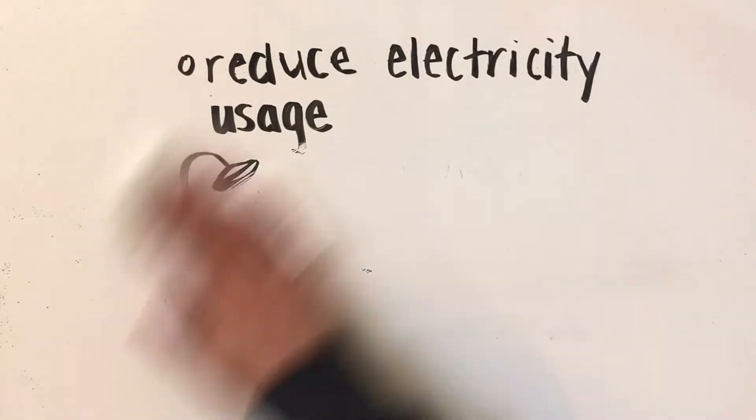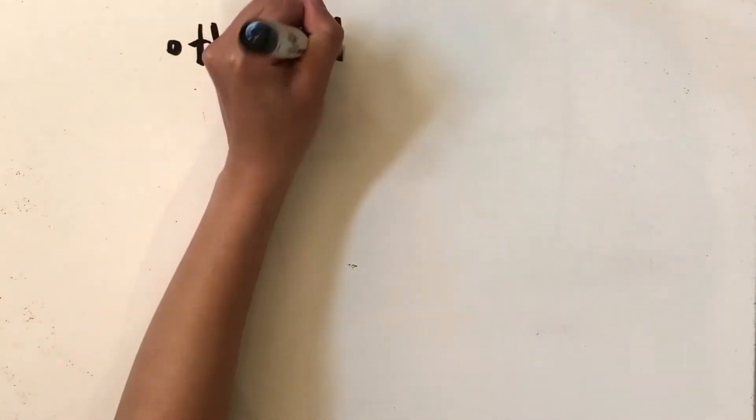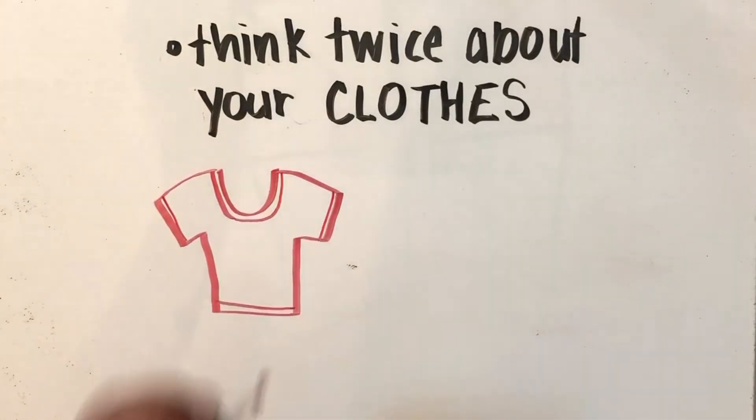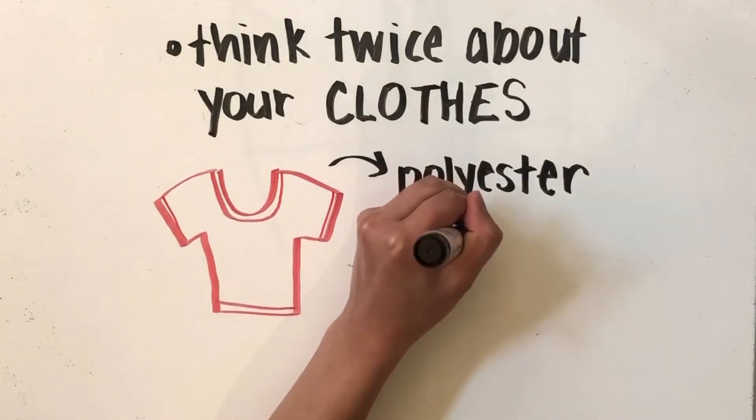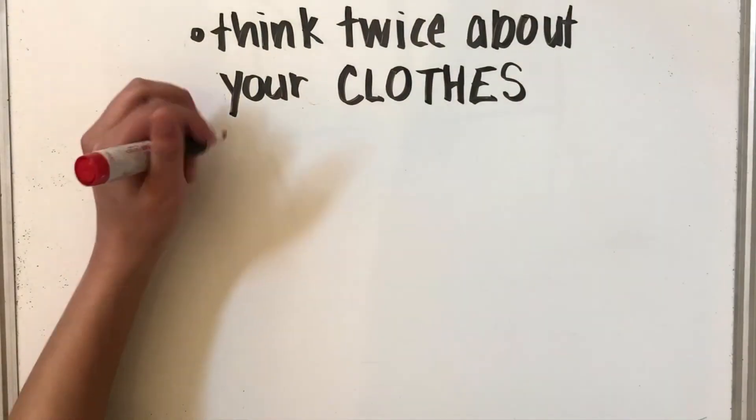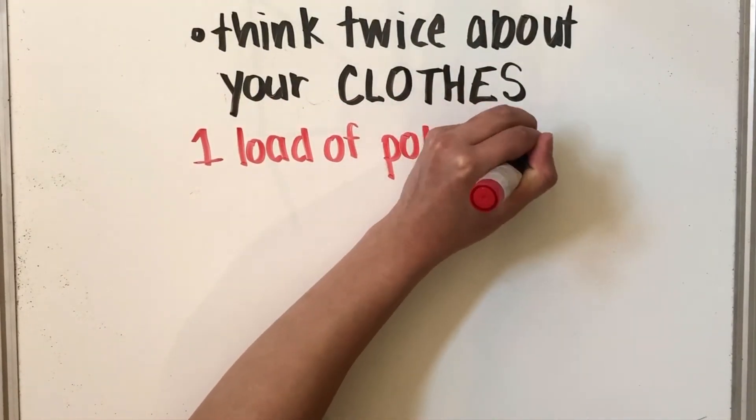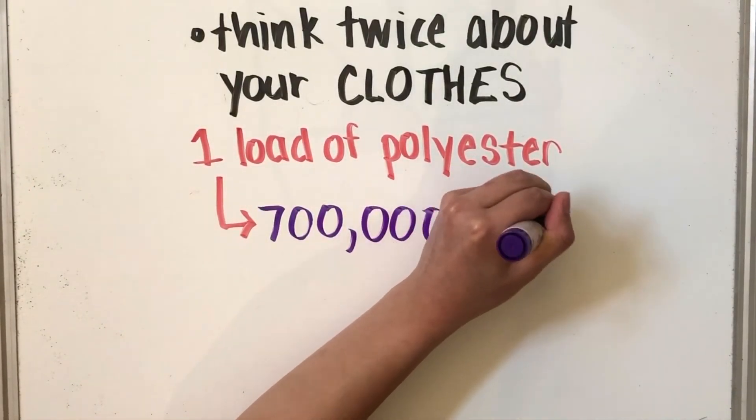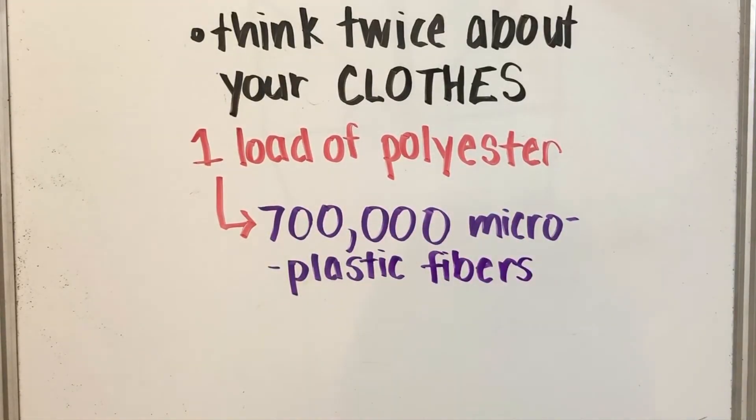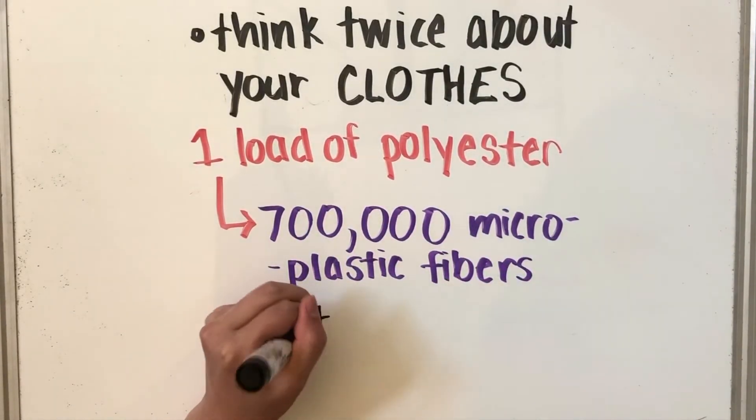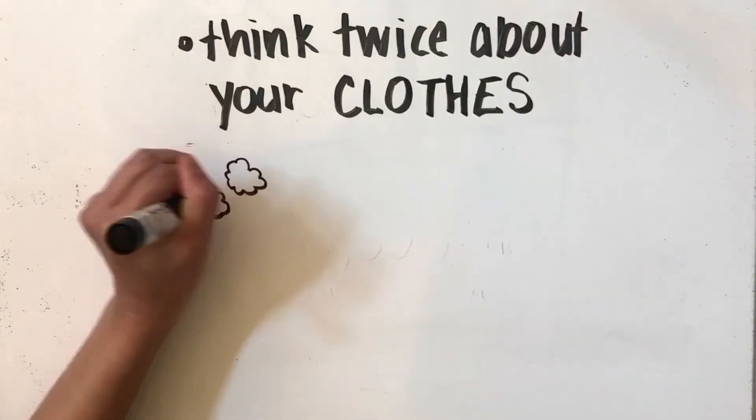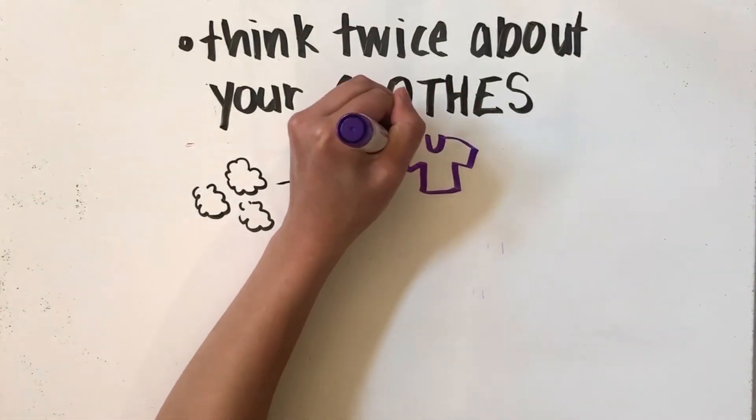Now, I want to talk about how you can indirectly impact energy use around the world. And this is by thinking twice about your clothing. Polyester is probably the most commonly used fabric in the clothing you're wearing today. The problem is, it's made from fossil fuels. Washing one load of polyester clothing can drop as many as 700,000 microplastic fibers into our environment. Microplastics are plastic debris that are less than 5 millimeters in length, and extremely harmful to our environment. Animals could eat it, and it could also continue polluting our oceans.